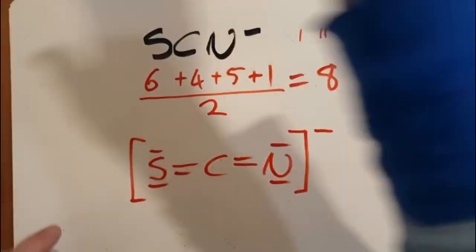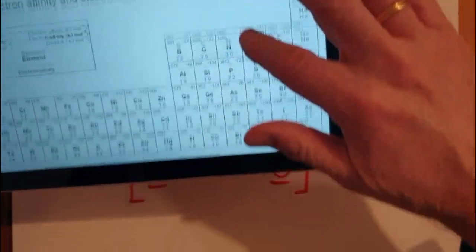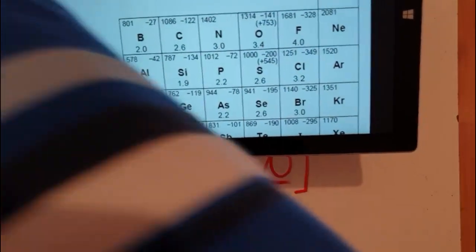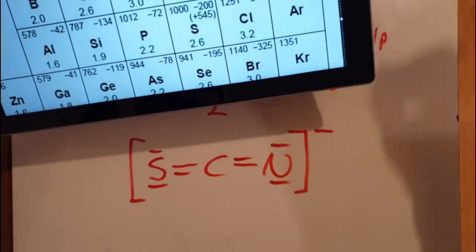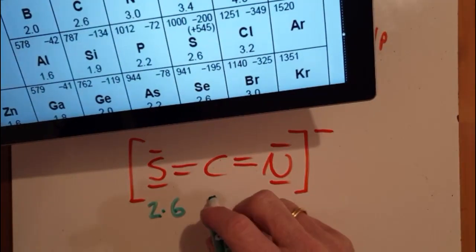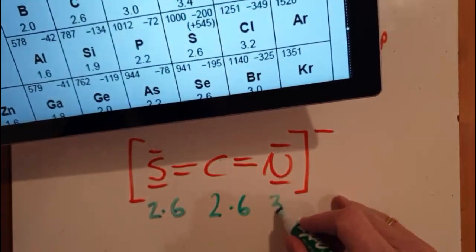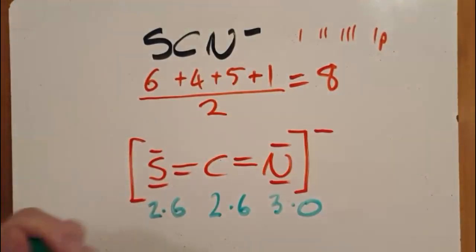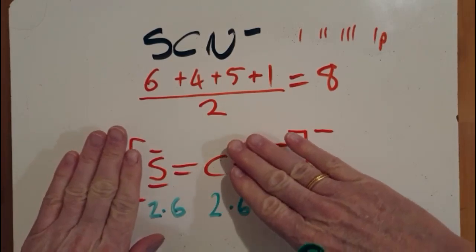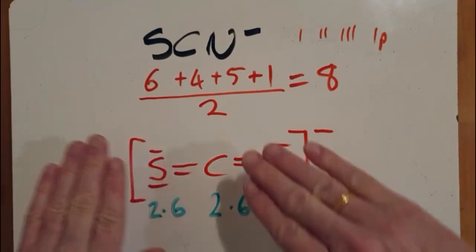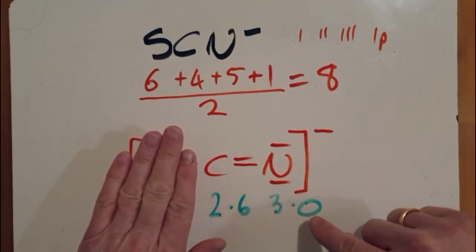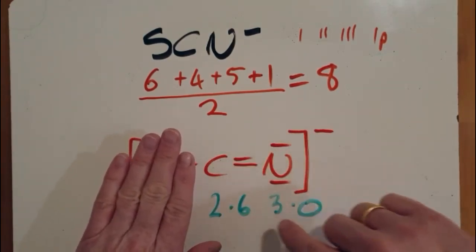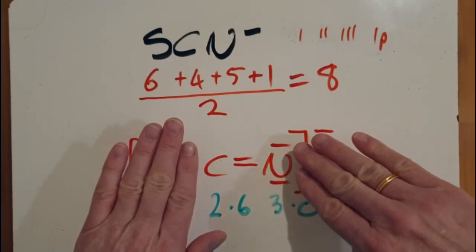Let's look at the dipoles — the bond dipole first, and then the molecular dipole. To work out dipoles, you've got to go to the electronegativity table. Electronegativity is a measure of how much an atom attracts the pair of electrons in the bond. Fluorine has the highest electronegativity of 4. We've got sulfur at 2.6, carbon also at 2.6, and nitrogen at 3.0. The sulfur-carbon bond — they both have the same electronegativity, so those electrons are shared equally, so there is no bond dipole there. For carbon and nitrogen, the electronegativity is different, so the electrons are slightly towards the nitrogen, giving a very weak, small dipole.